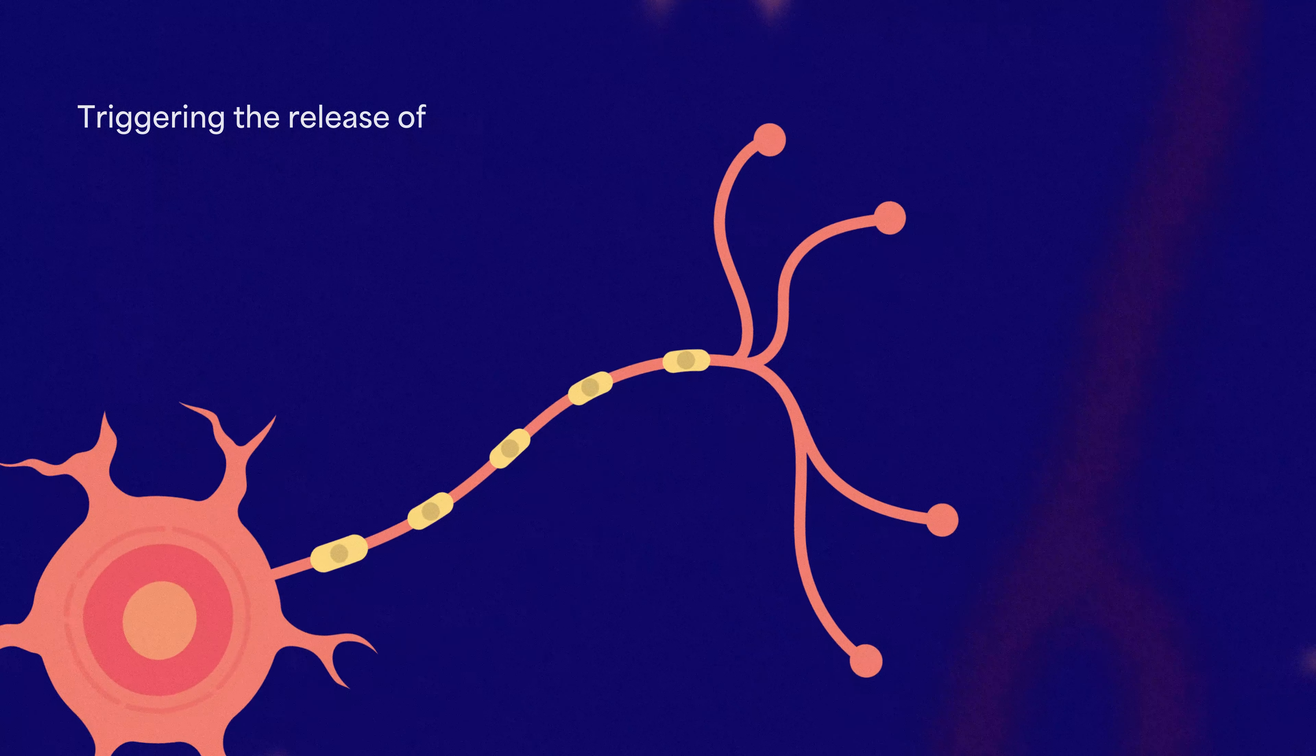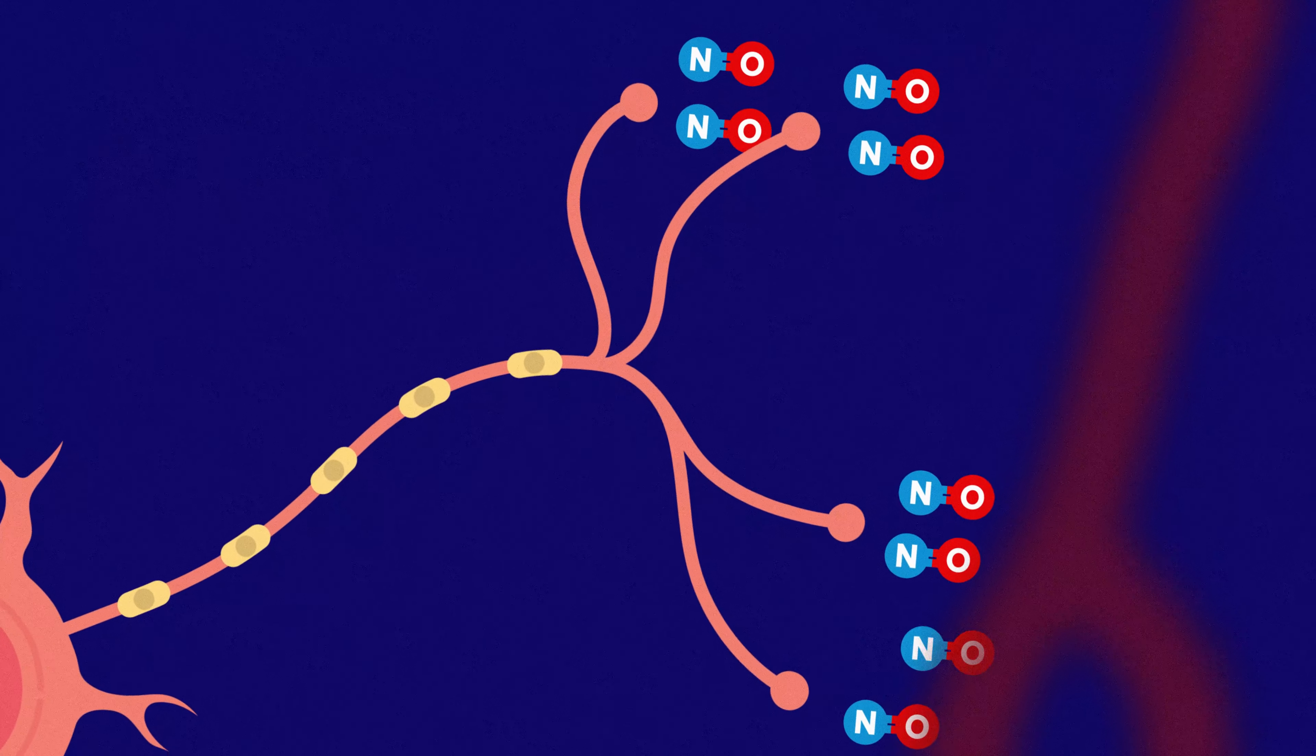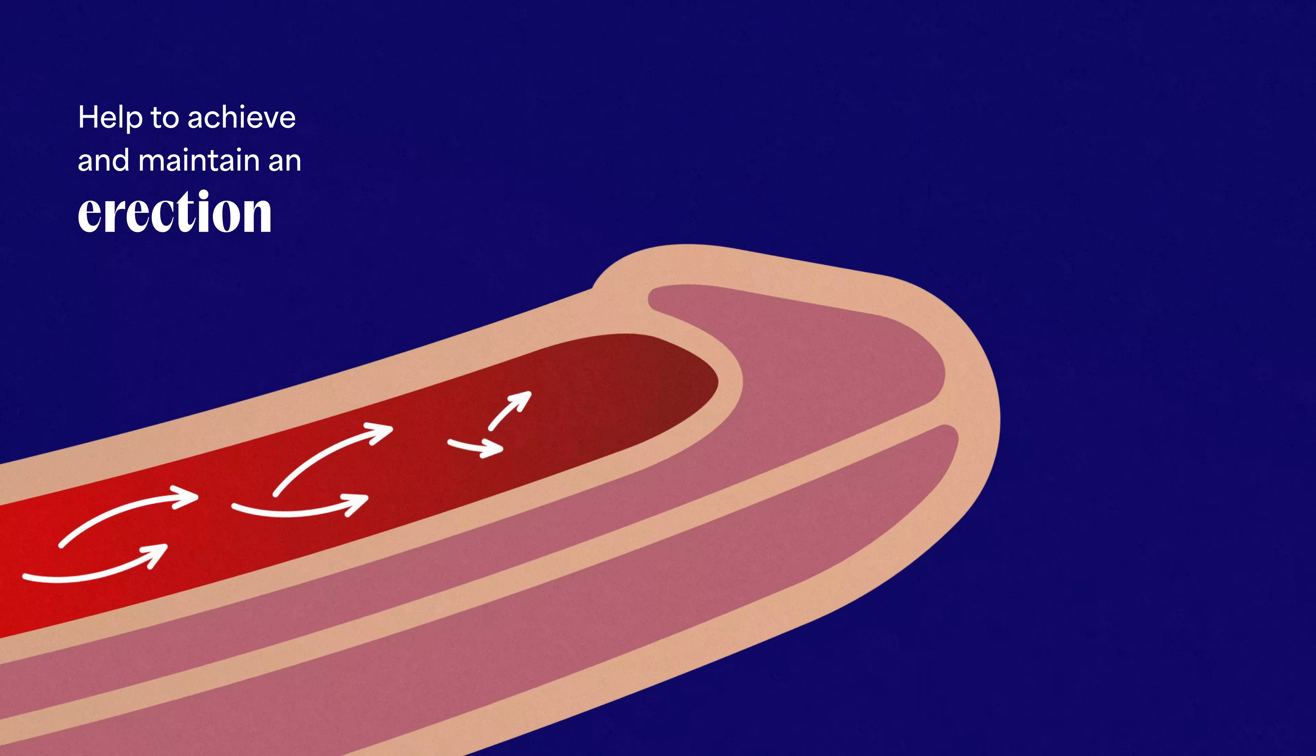This triggers the release of nitric oxide, leading to vasodilation and increased blood flow in the penis to help achieve and maintain an erection.